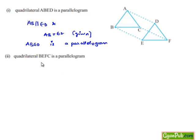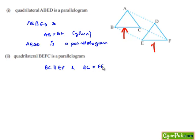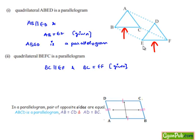For the second part, we need to prove that quadrilateral BEFC is a parallelogram. We are given that BC is parallel to EF and also BC is equal to EF. As the opposite sides are parallel and equal in a quadrilateral, we can say BEFC is also a parallelogram.